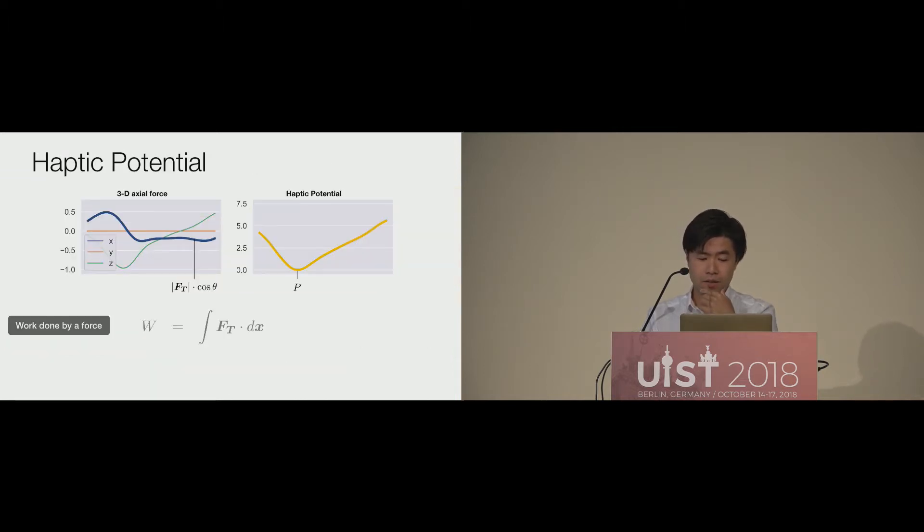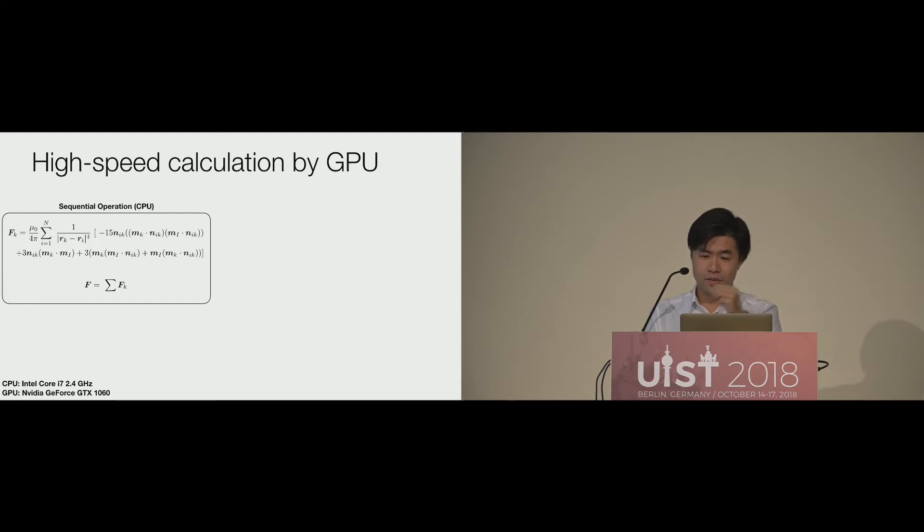For getting intuitive and impressive visual expression of haptic feedback, I referred to work done by a force over the x-axis. The shape of work done by the force is very corresponding to the sensation on the finger when the magnet is moved. Haptic potential represents as P, which is gained by integral of F_T times cosine theta.